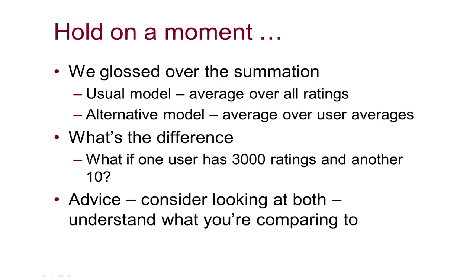We glossed over something: I said we could sum errors for every rating and divide by the number of ratings, and that is the usual model, but there are alternatives. The most common is to look at the error each user faces — average errors per user first, then average those averages together. A user with 10 ratings divides by 10; a user with 3,000 divides by 3,000. It's not purely mathematical, but it gives a view of per-person likely effect, and a distribution of per-user errors can be quite meaningful.